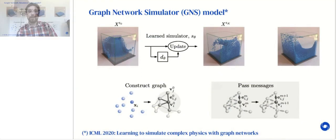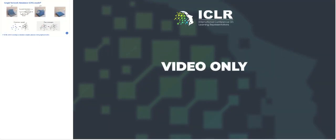Our model for meshes builds on our previous graph network simulator model for particle systems, accepted at ICML last year. This model worked by building a nearest neighbor graph, and then running multiple steps of message passing in that graph. The model worked extremely well for simulations of fluids and granular materials, but not so well for things like elastics.